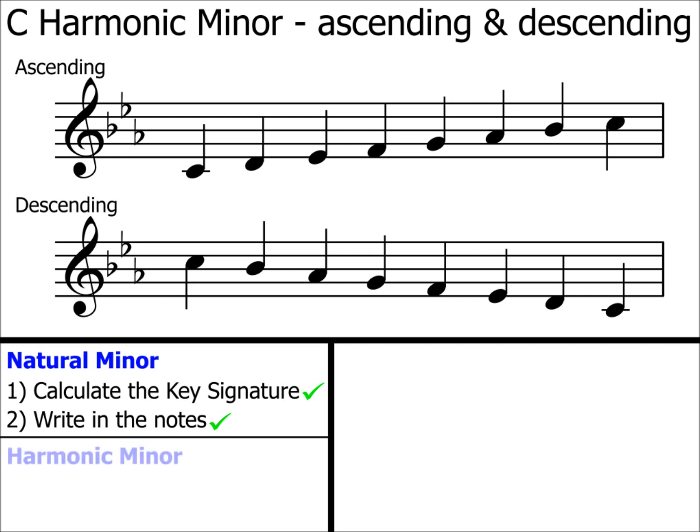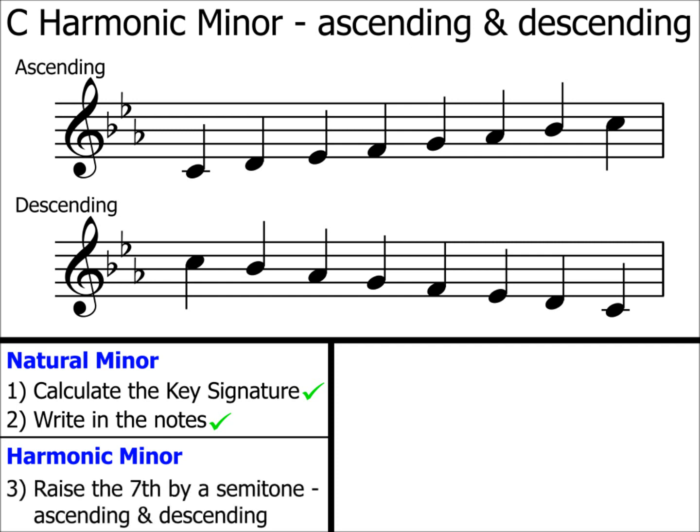At the bottom of the screen, I'll detail the instructions for harmonic minors. The next step, step three, is raise the seventh by a semitone, ascending and descending.